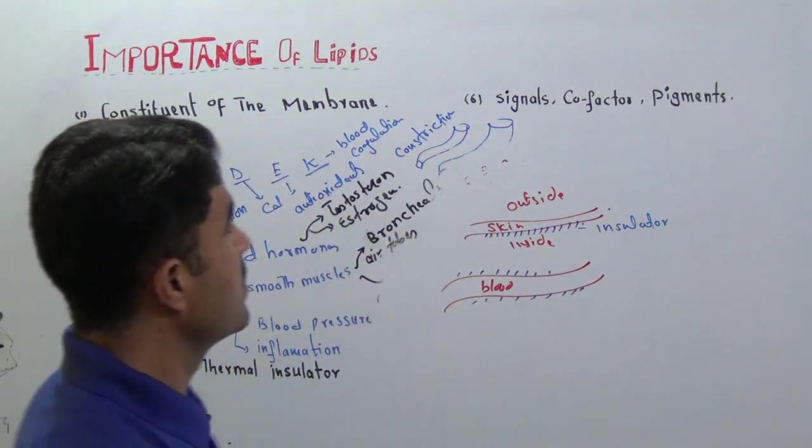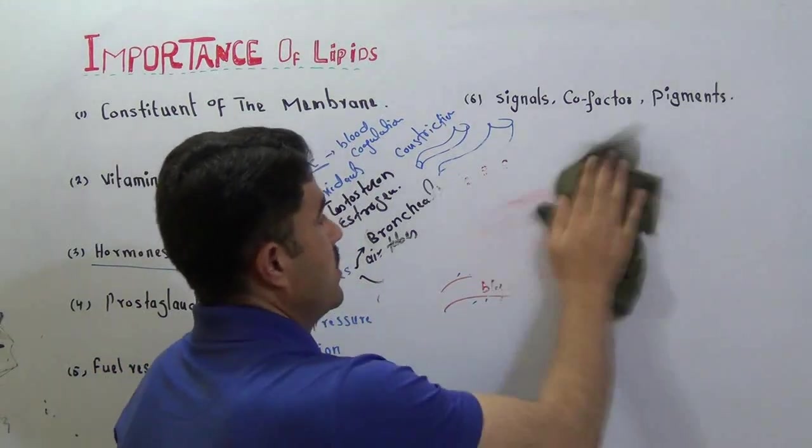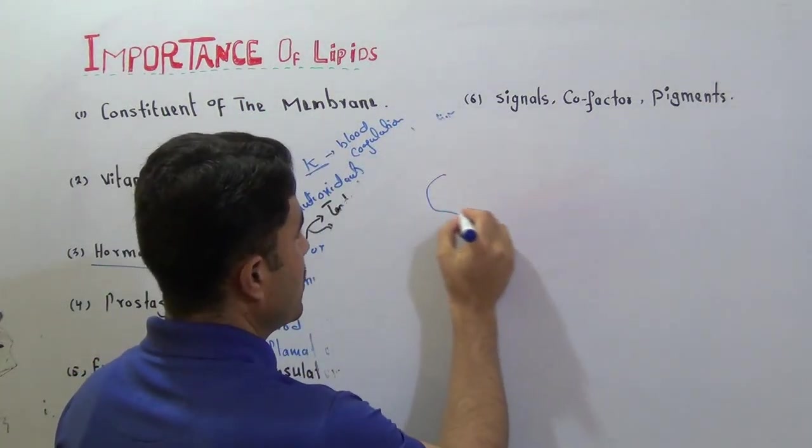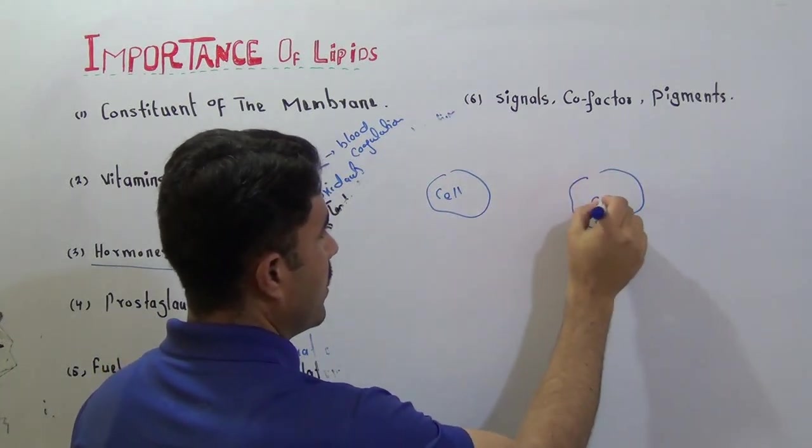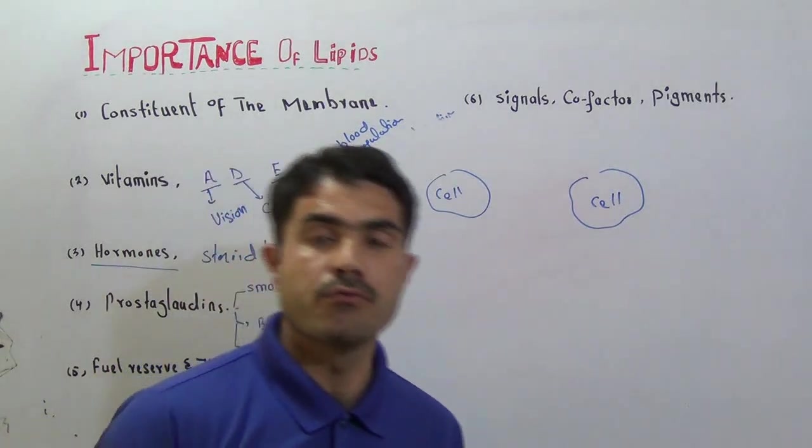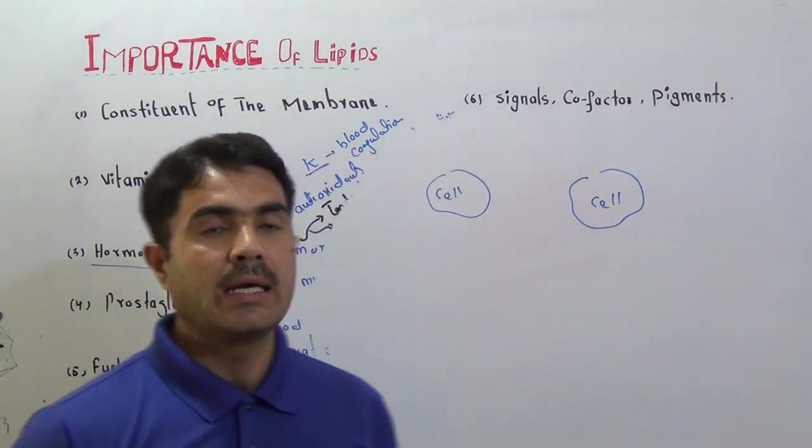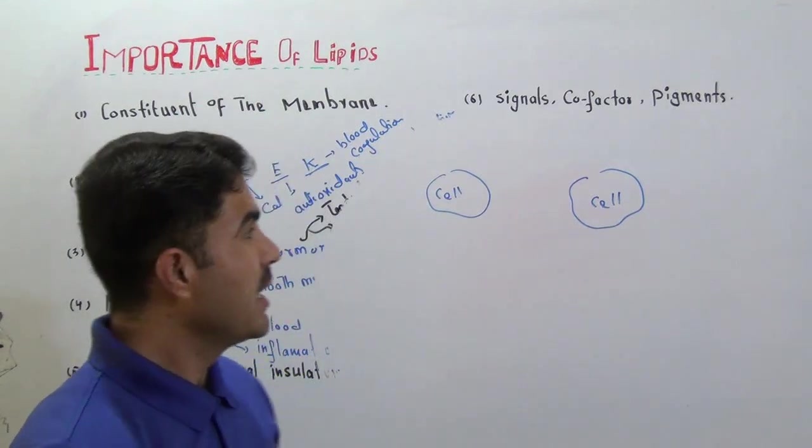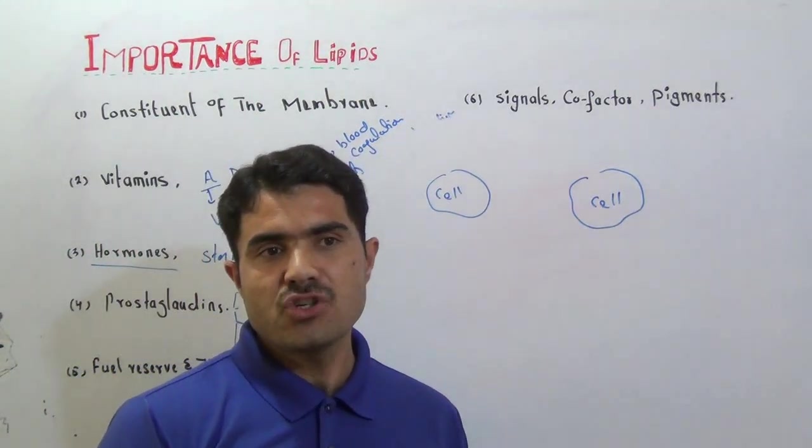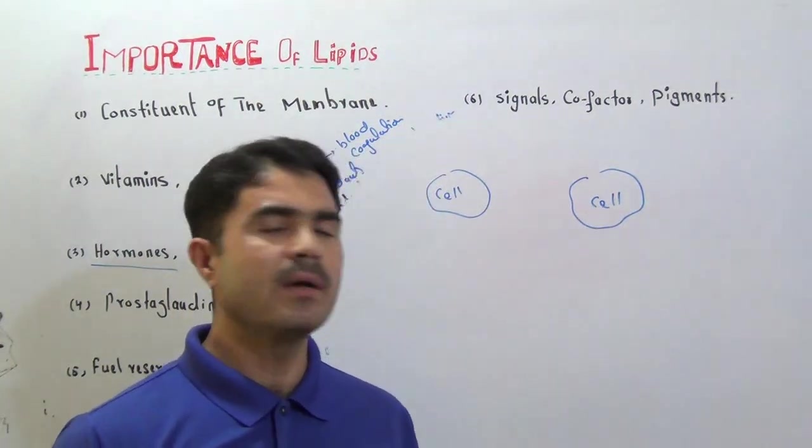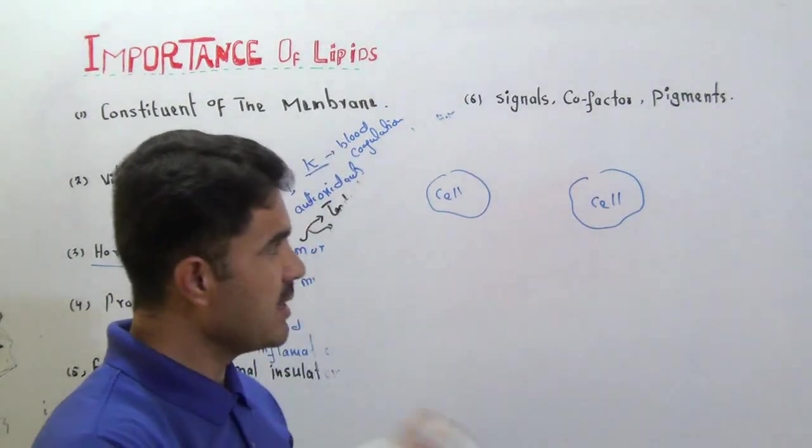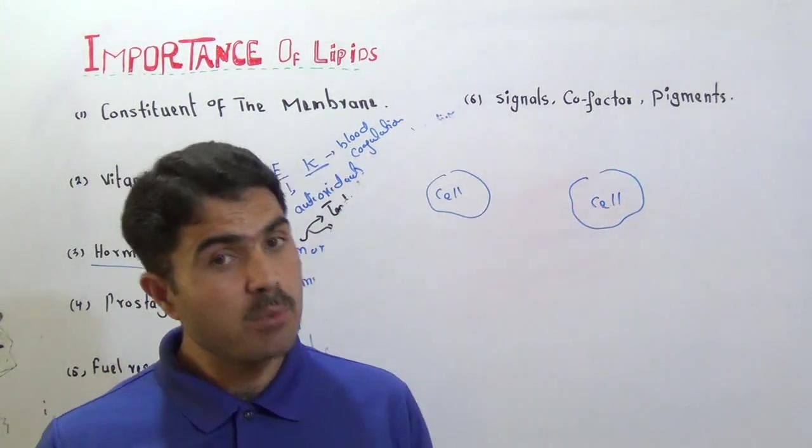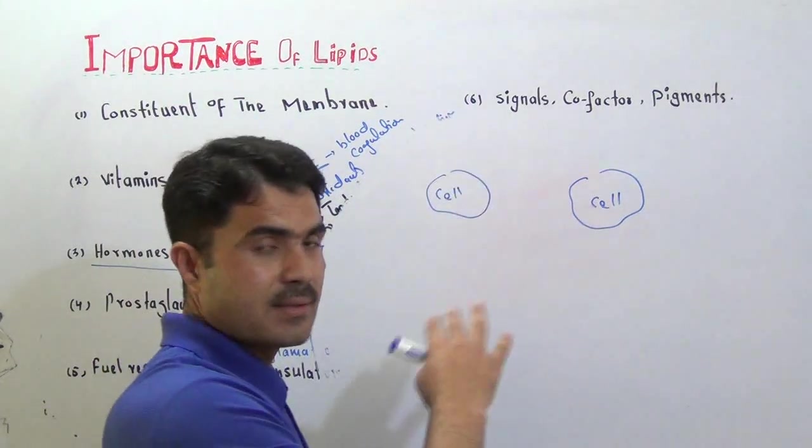The last one is signal, cofactor, and pigments. There are lipids that act as signaling molecules between one cell and another cell. I have already recorded a video lecture on cell-to-cell signaling mechanism in pharmacology. Inside the body, one cell is in connection with another cell. We people connect with one another through social media or mobile phones, but one cell is connected with another cell with the help of special molecules, and some of them are lipids as well. They give signals to the cell.